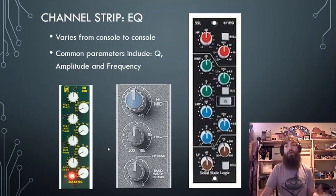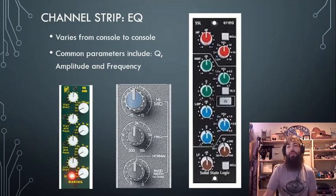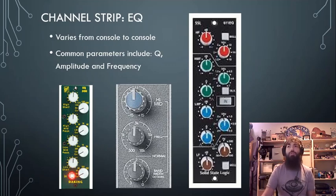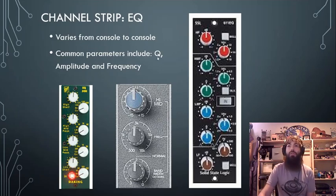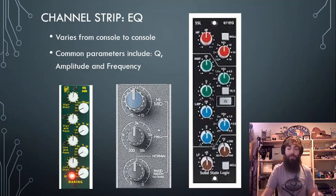Beyond the preamp section on each channel strip, you'll usually find EQ. EQ is pretty standard nowadays on most consoles, and the parameters can include anything from amplitude to frequency. It's just tone control, so we're able to individually tone-control each channel.